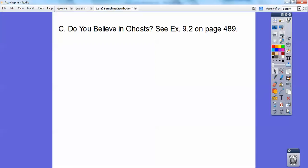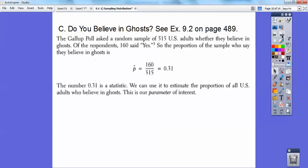Do you believe in ghosts? Let's see. So this is example 9.2 on page 488. I know Mr. Malin believes in ghosts, by the way. The Gallup poll asks a random sample of 515 U.S. adults whether they believe in ghosts. Of the respondents, 160 said yes, I believe in ghosts. So the proportion of the sample who say they believe in ghosts is 160 over 515. Notice this is p hat. This little p hat means it's a sample proportion. If the hat wasn't there, it'd be the population proportion. Anyways, this sample proportion is 31%, 0.31.